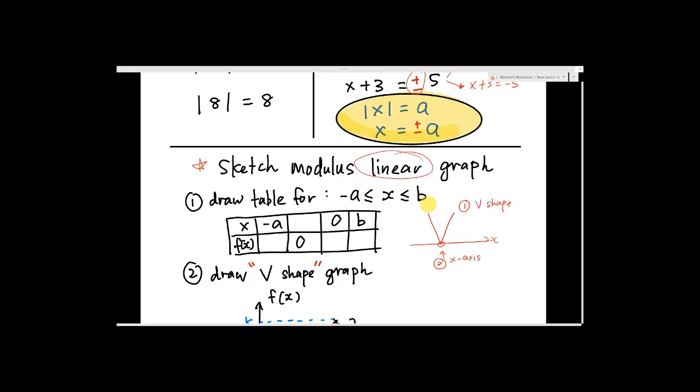What you need to do is very easy: draw a table, take the lowest value of the domain which is negative a and put it here, then the largest value of the domain you put in the fourth column, and then add zero for both.